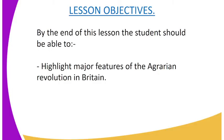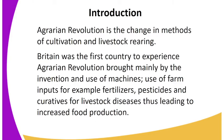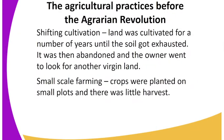Our lesson objective is that by the end of the lesson you should be able to highlight the major features of the Agrarian Revolution in Britain. The Agrarian Revolution is the change in the methods of cultivation and livestock rearing. Britain was the first country to experience it, brought mainly by the invention and use of machines and farm inputs such as fertilizers, pesticides, and curatives for livestock diseases, leading to increased food production.